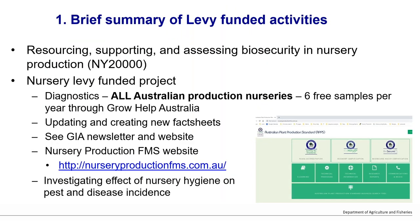This webinar is part of a project that offers six free diagnostic samples per year. If you have plant health problems caused by a pest or disease you can't identify, you can send samples to Grow Help Australia. They will triage them, run tests, and send you a report. You get six free samples per year until the end of 2025.